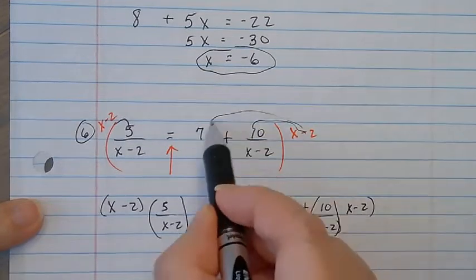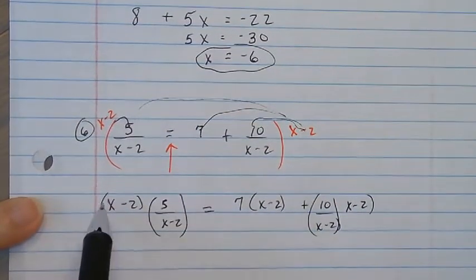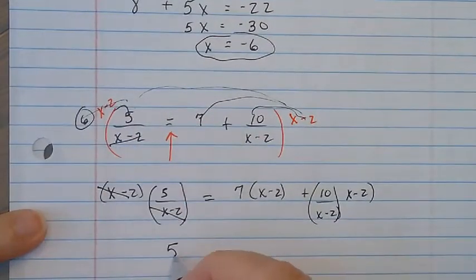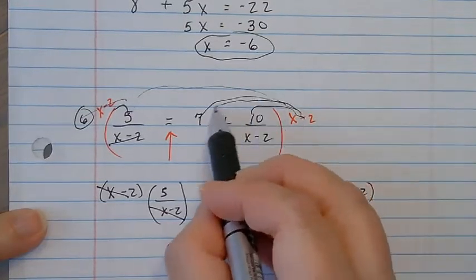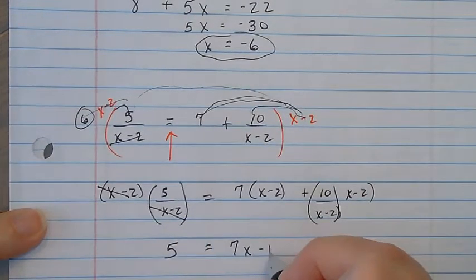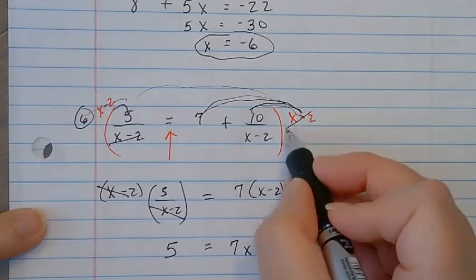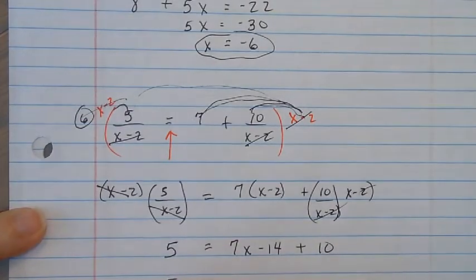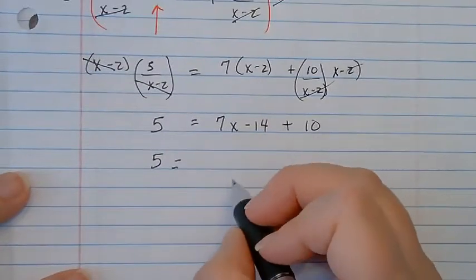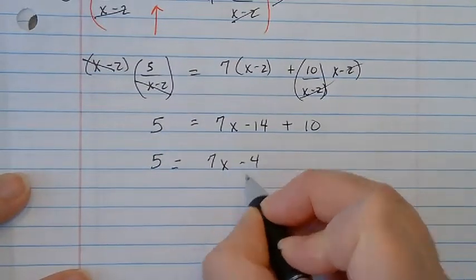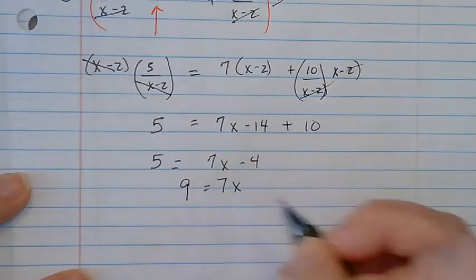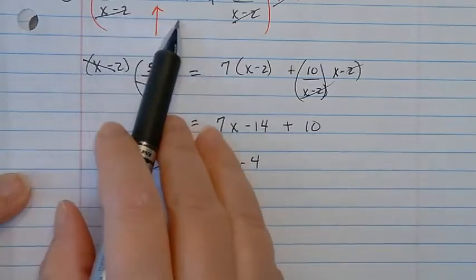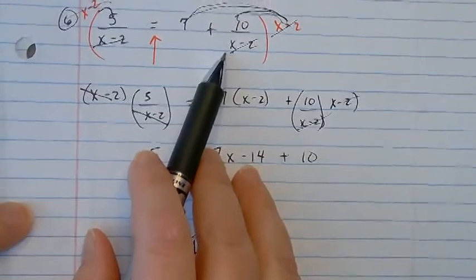I've just distributed, and in a moment I'm going to quit writing this step. The x minus 2 and x minus 2 cancel, so on the left side I just get 5. Here I'm taking x minus 2 times 7, so I get 7x minus 14. Then when I take this times this, the x minus 2 cancels and I get plus 10. So I don't have a fraction anymore: 5 equals 7x minus 4, giving 7x equals 9, so x equals 9 sevenths. The only number I don't want x to be is 2, because 2 minus 2 would make 0 on the bottom of the fraction.